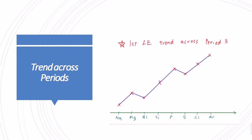Across the third period, the first ionization energy increases. We can see how it affects sodium, magnesium, aluminium, silicon, phosphorus, sulfur, chlorine, and argon.